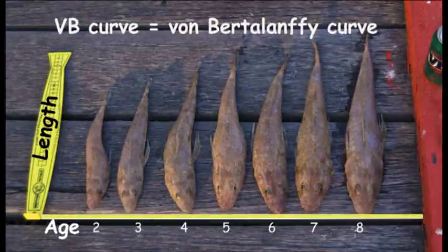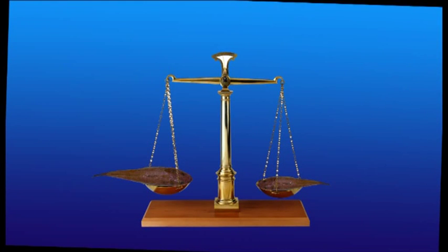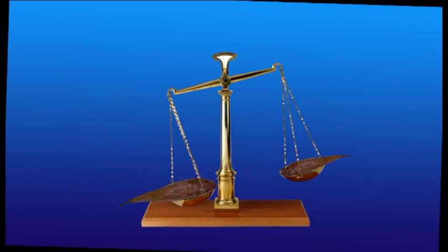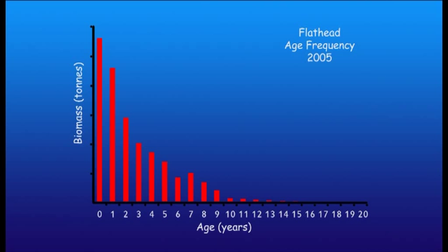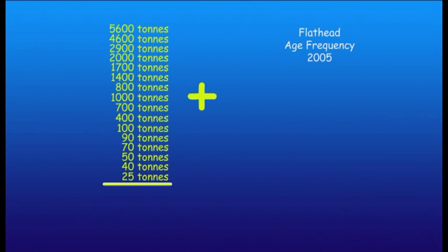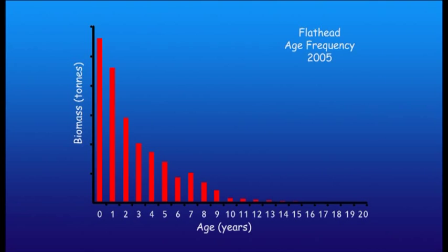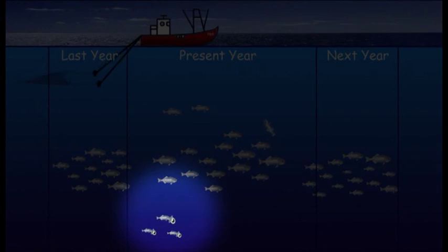The other factor apart from recruitment that leads to an increase in stock biomass is fish growth. From our VB curve we know that on average a 4-year-old tiger flathead will be 35cm long, and at age 5 it will be 37cm long. On average, a 37cm tiger flathead will be heavier than a 35cm tiger flathead. So in addition to the year's recruitment, the model calculates weight increase due to the growth of fish already present, to end up with a biomass for each year group and a total biomass for the stock.